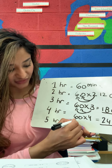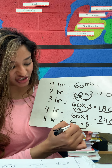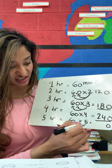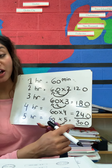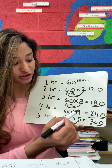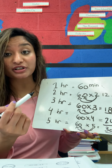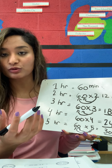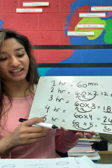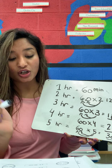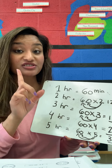Five hours equals 60 times five — five times zero gives me zero, five times six gives me 30 — so in five hours there are 300 minutes. Does that make sense? We can keep on going and keep multiplying our 60 by our number of hours. So if they've given us 10 hours, what would we multiply 10 with? 60. So we can keep on going to find that out. But for this lesson, what do we need to know? We need to know how to convert our hours into minutes.